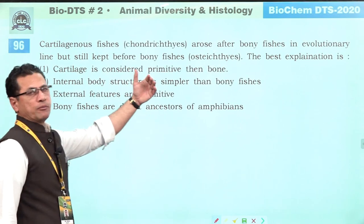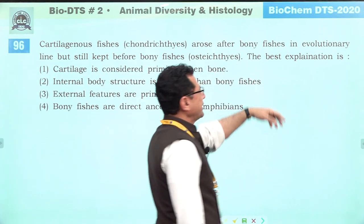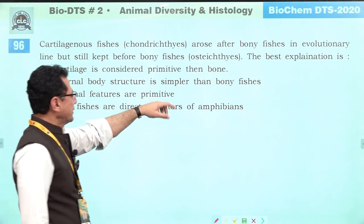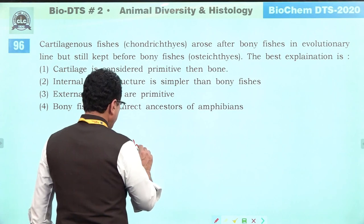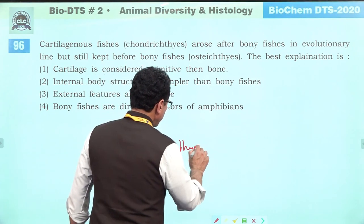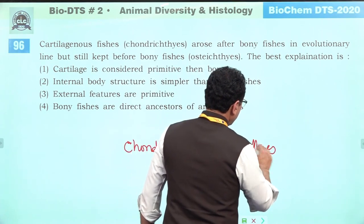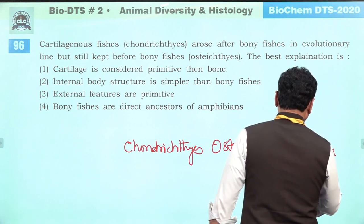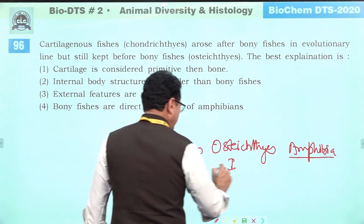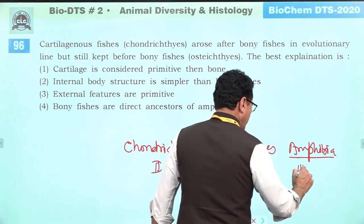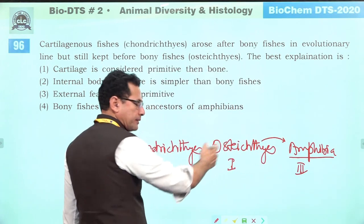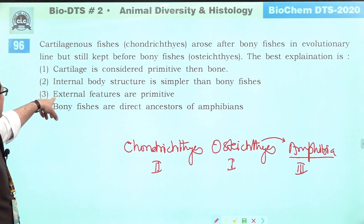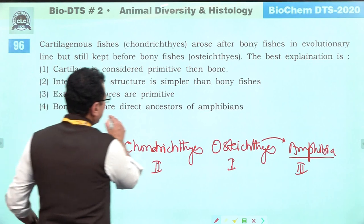Cartilaginous fishes arose after bony fishes in evolution but are still placed before them. The best explanation is that bony fishes are the direct ancestors of amphibians. So in the evolutionary/phylogenetic line: Chondrichthyes first, then Osteichthyes, then Amphibia. Bony fishes being direct ancestors of amphibians is why they are placed after cartilaginous fishes. Answer is fourth.